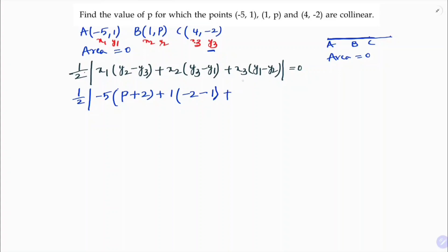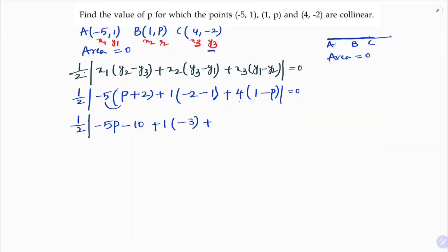Plus x3 is 4, into (y1 minus y2) which is (1 minus p). Now expanding: half of minus 5 times (p + 2) gives -5p minus 10. Plus 1 times (-2 - 1) gives minus 3. Plus 4 times (1 minus p) gives 4 minus 4p.